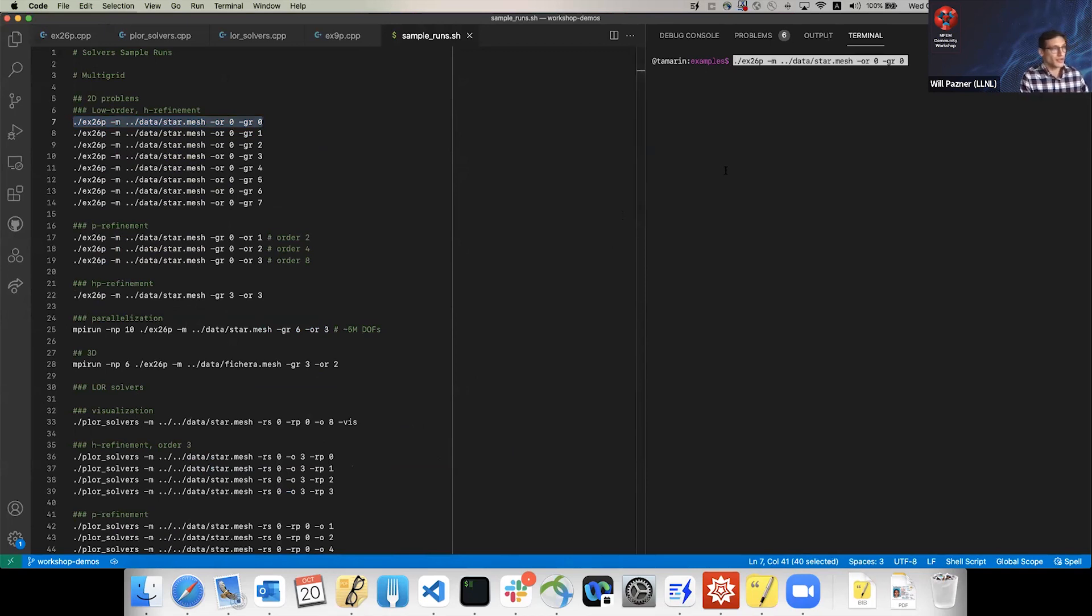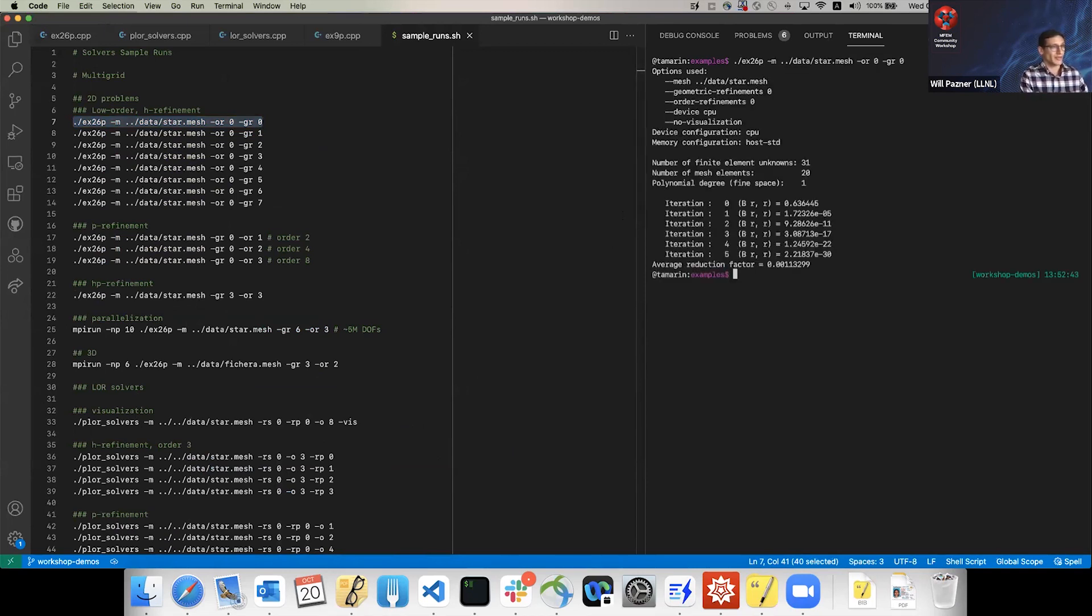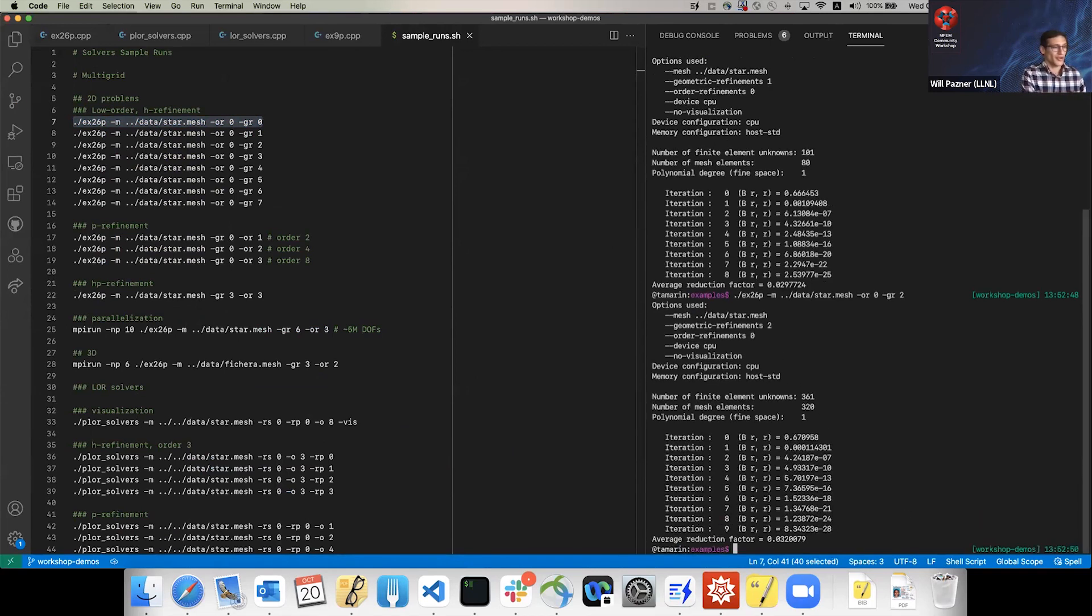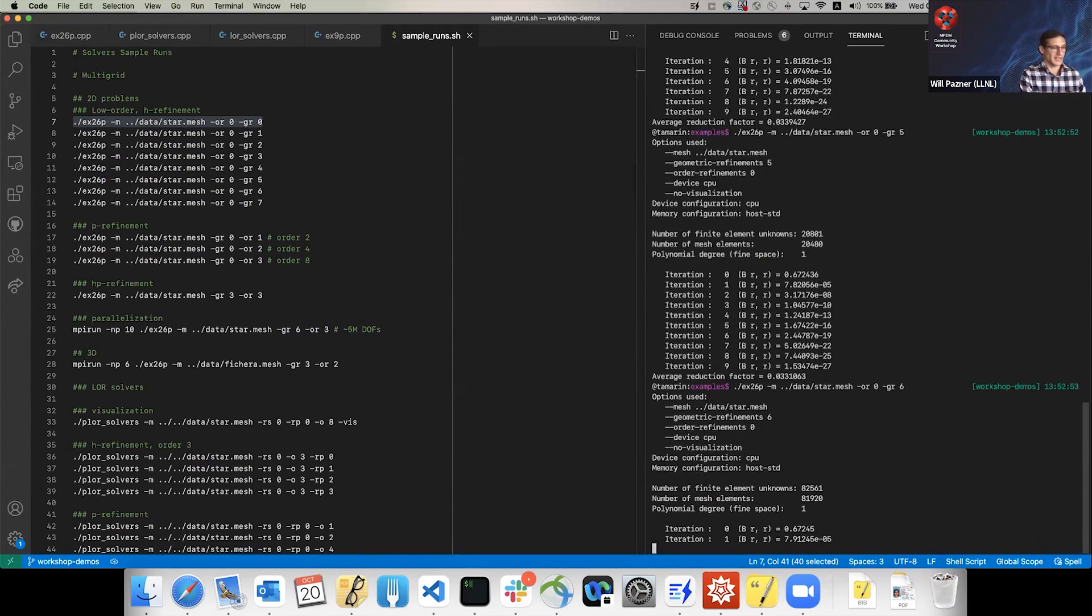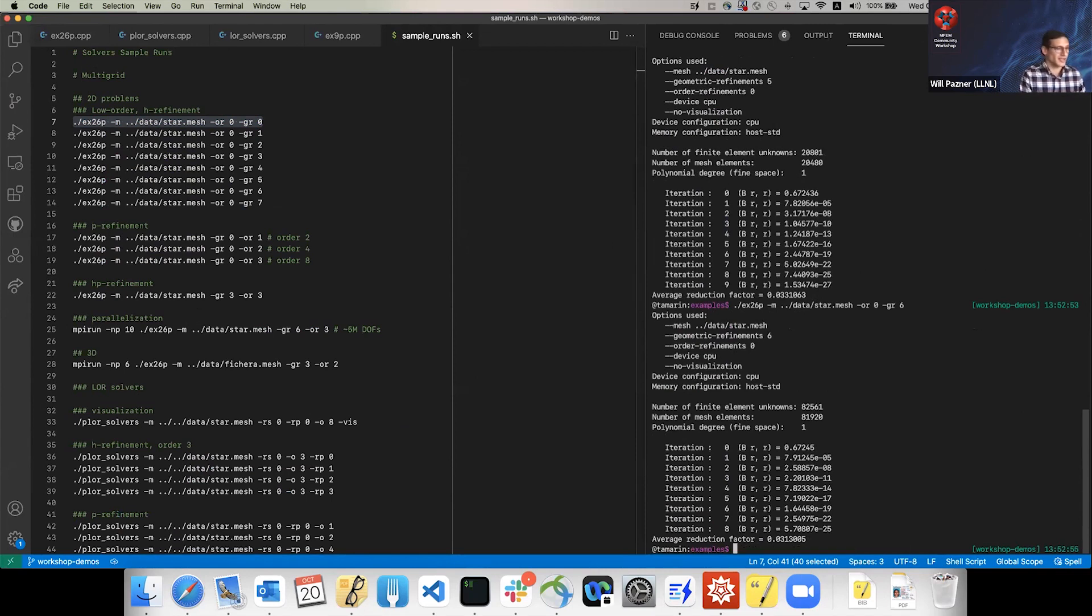I've got some sample runs here just to illustrate. This is doing H refinements. GR is the number of geometric or H refinements. Every time I'm running this, I'm increasing the problem size, and you get the classic multigrid behavior of constant iterations.